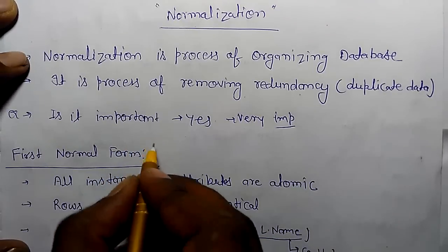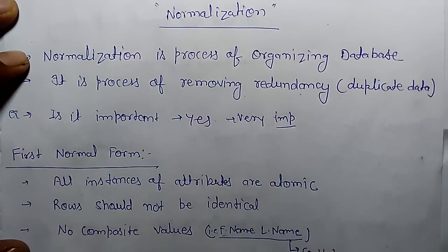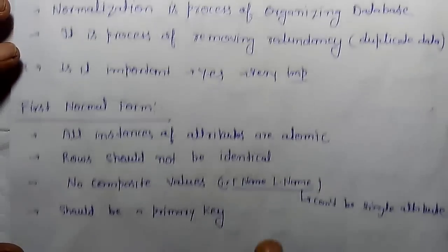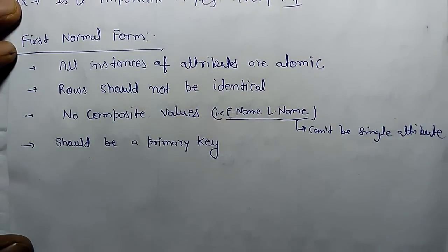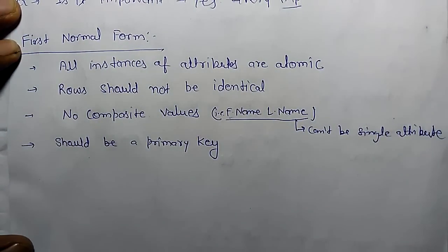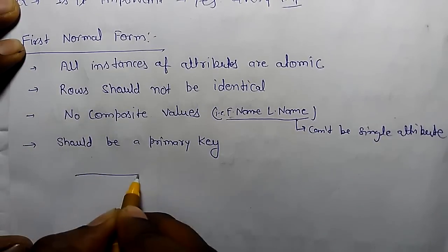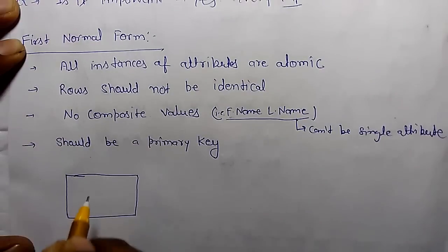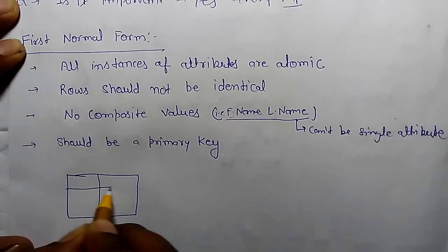There are first normal form, second normal form, third normal form, BCNF, and some other normal forms are also available. Let's understand first normal form. How can we define that a particular table is in first normal form?